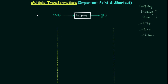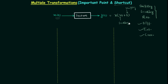In this lecture I will explain all the basic concepts required to perform multiple transformations, and at the end I will explain one shortcut to easily obtain the answer. For this purpose I will take one example where the input signal is x(t) and the system is producing output y(t) equal to x(2t+3). Comparing x(t) with x(2t+3), this system is performing both time shifting and scaling — a case of multiple transformations.